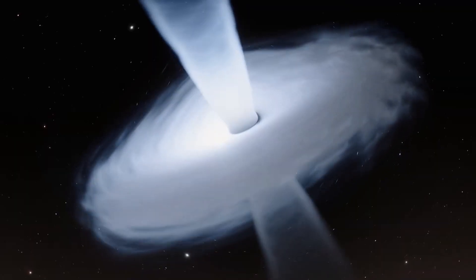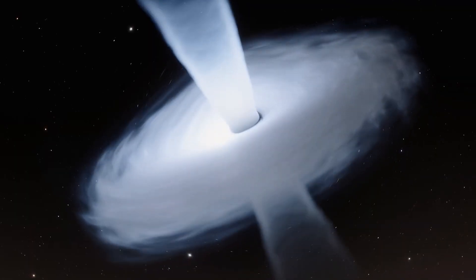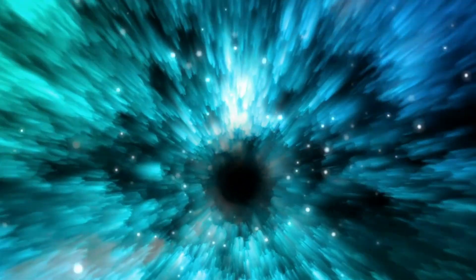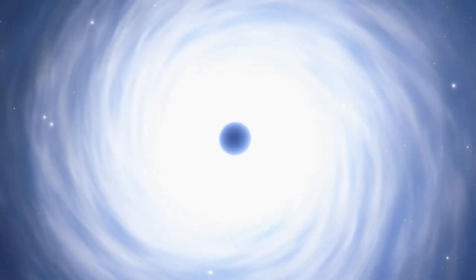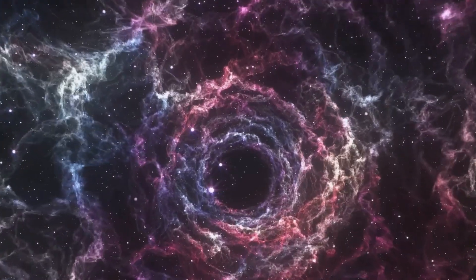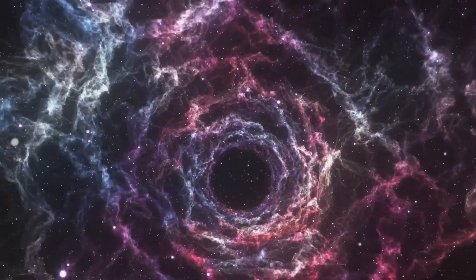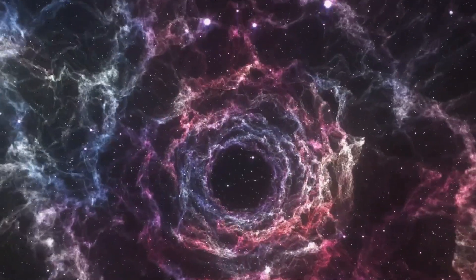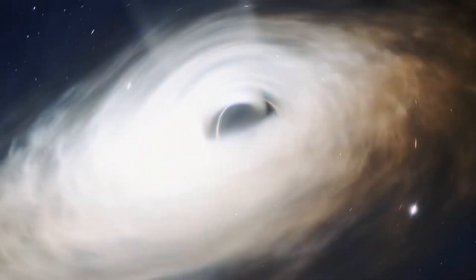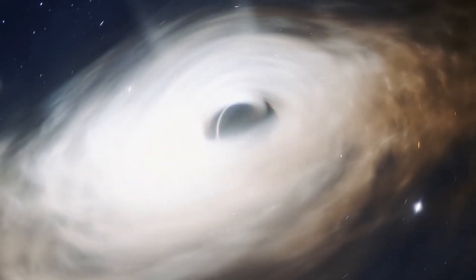Another theory that has been proposed to solve the information paradox involves the concept of wormholes. Wormholes are theoretical passages through space-time that could potentially create shortcuts for long journeys across the universe. According to this theory, when something falls into a black hole, it could actually be spit out somewhere else in the universe through a wormhole. This means the information isn't lost. It's just transported to a different location.